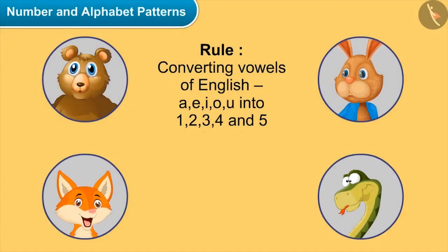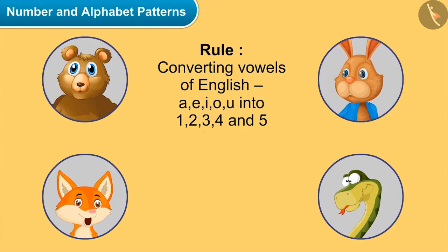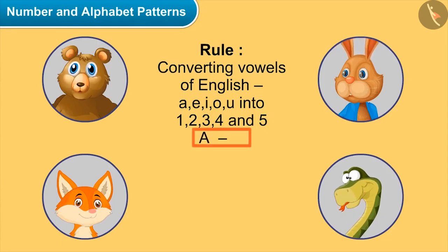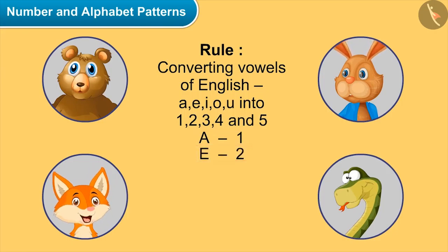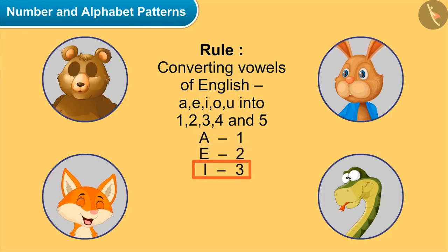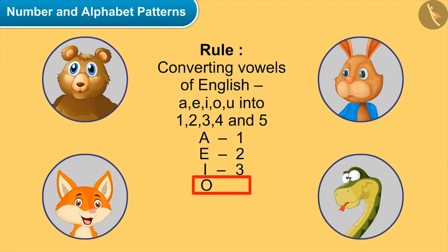We can convert the vowels of English — A, E, I, O, U — into 1, 2, 3, 4, and 5. So we will convert A to 1, E to 2, I to 3, O to 4, and U to 5.